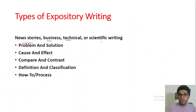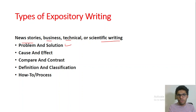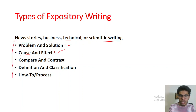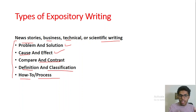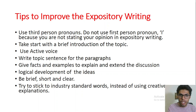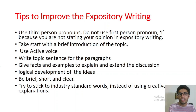News stories, business writing, technical writing, and scientific writing can be written in the form of problem and solution — you share the problem and then give the solution. You can also talk about cause and effect. Other styles in expository writing include compare and contrast, definition, classification, and how-to or process essays. Now, here are some tips on how you can improve expository writing.